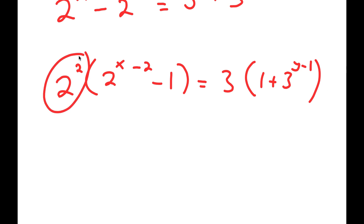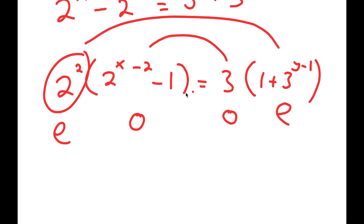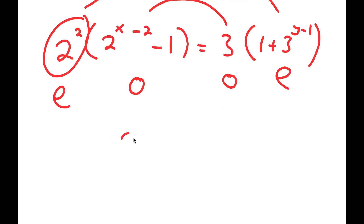Notice that 2 squared equals 4, which is an even number. And 2 to the power of x minus 2 — since 2 to any power is even, even minus 1 is odd. So the left side is an even number times an odd number. On the right, 3 is odd, 3 to any power is odd, and odd plus 1 is even. So I have an even times an odd on the left equal to an odd times an even on the right. I'm going to set the odd parts equal to each other and the even parts equal to each other, giving me two equations.